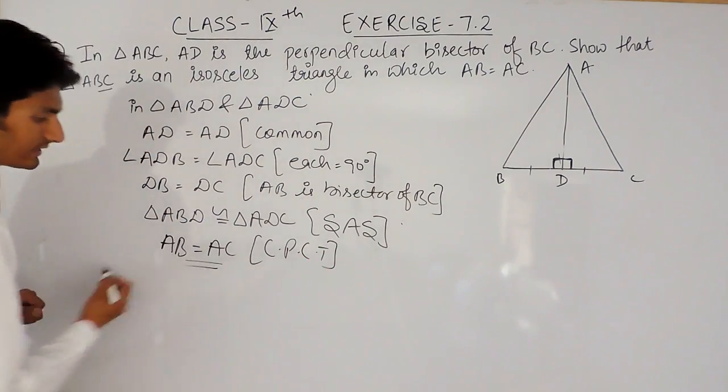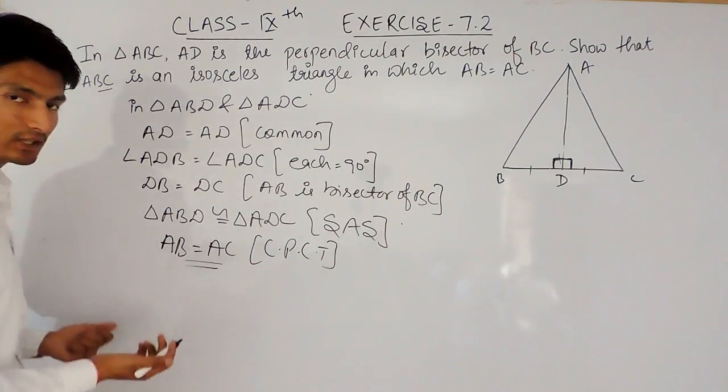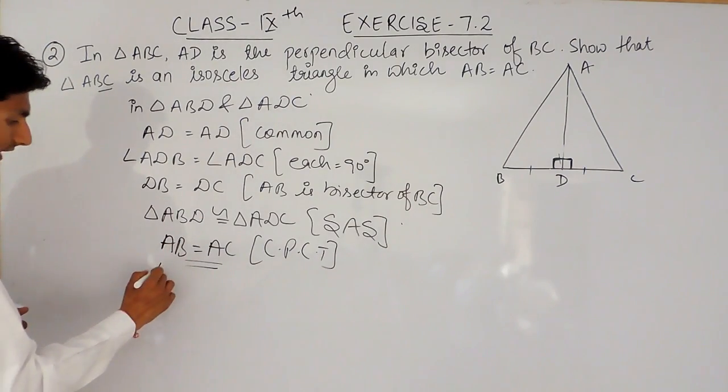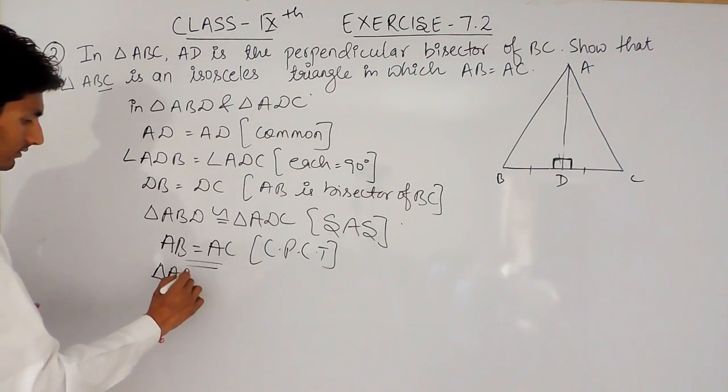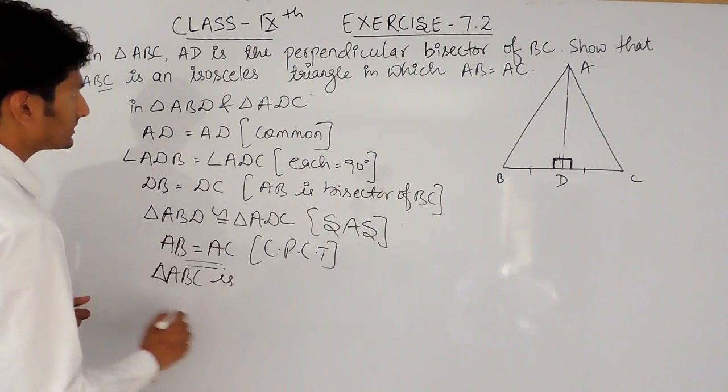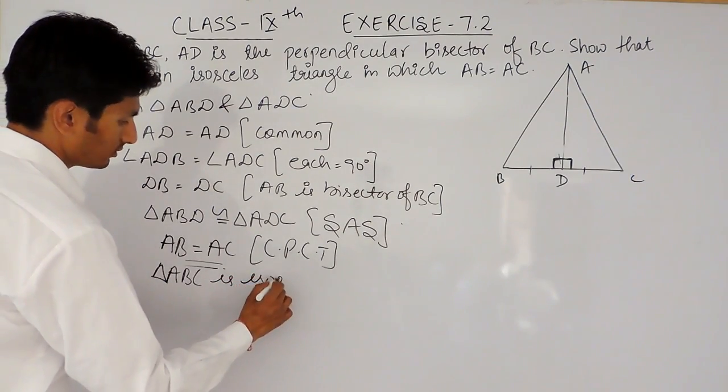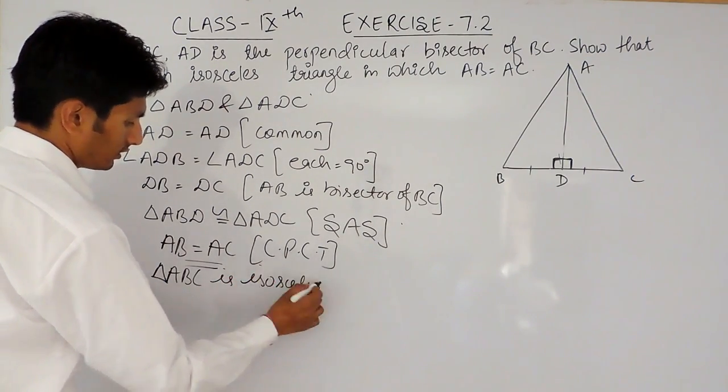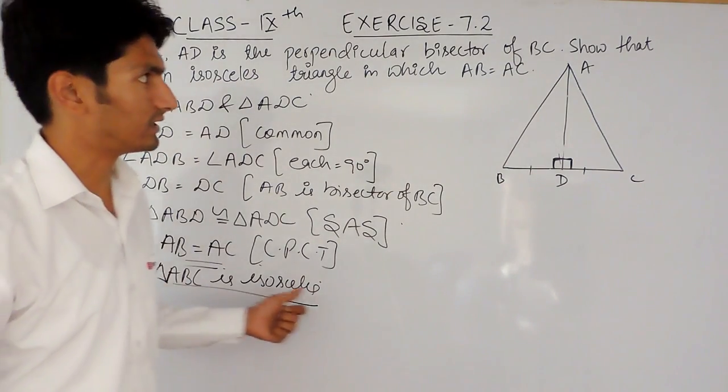And if these two sides are equal, in any triangle, if two sides are equal, in that case, that triangle is known as isosceles. So triangle ABC is isosceles here.